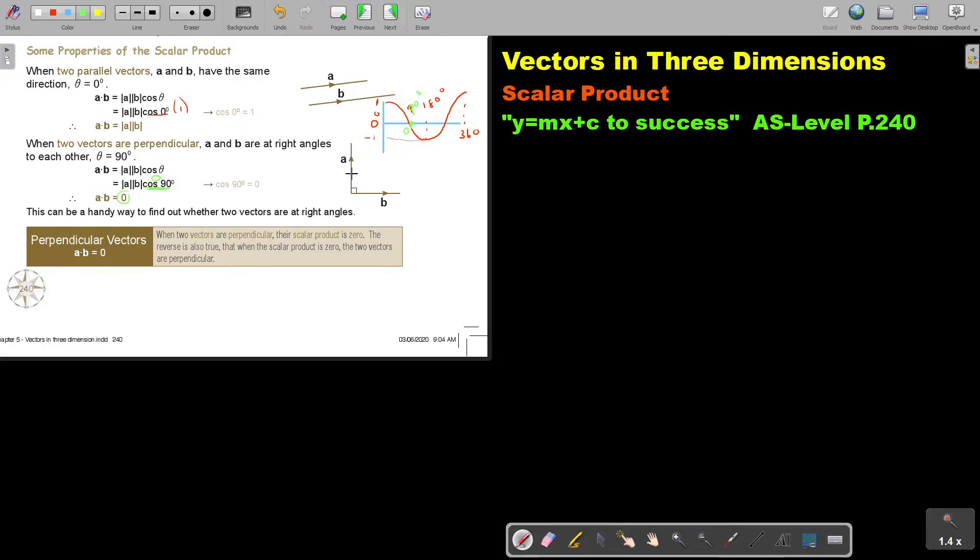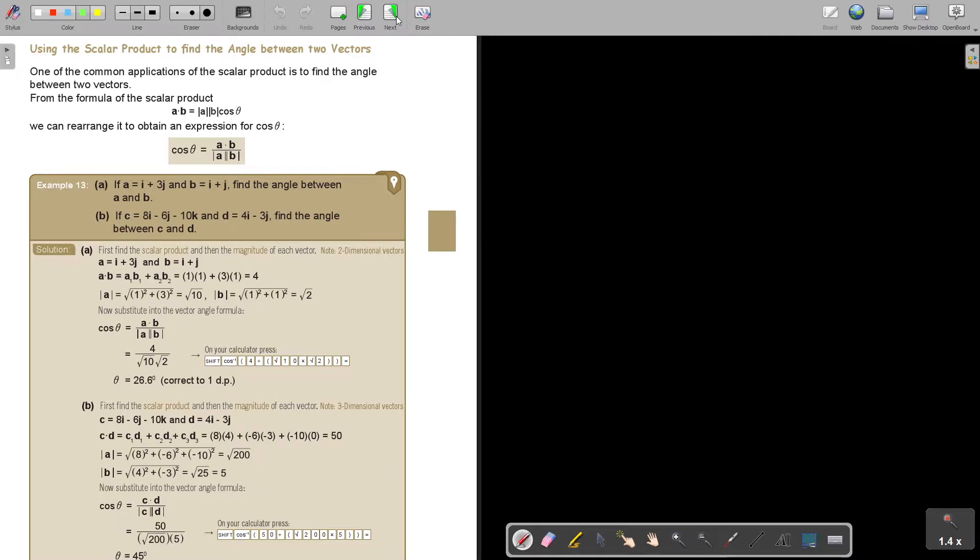So this is very important. If two vectors are perpendicular, their scalar product will be zero. And I can also use it to prove it. This can be handy when you find out whether two vectors are at right angles. So as soon as you see that the scalar product is zero, then you know the vectors will be 90 degrees to each other, perpendicular. When the scalar product is zero, it's due to that cos 90. The reverse is also true. When the scalar product is zero, then two vectors are perpendicular. It's a way that you can prove it.